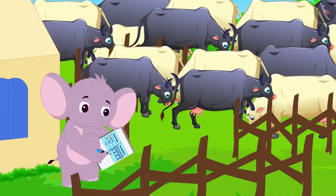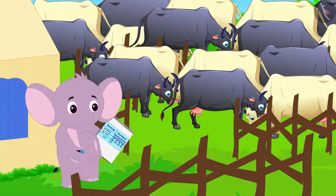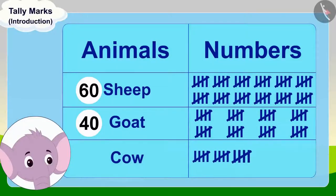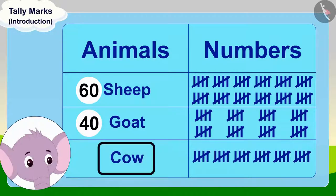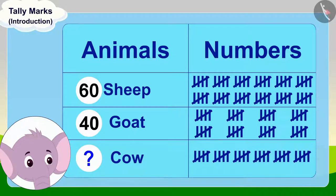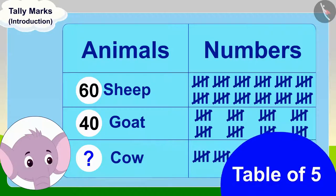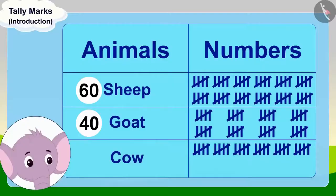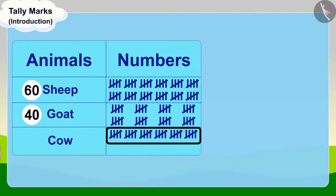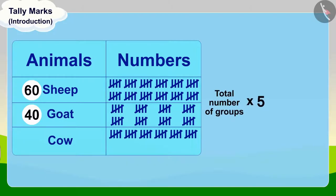Appu now counted his cows using tally marks. Children, do you know another method of counting tally marks quickly? We can count them very quickly by using the table of five. There are six groups of tally marks here. To find the total number of cows, we only have to multiply the total number of groups by five. Six times five is thirty.